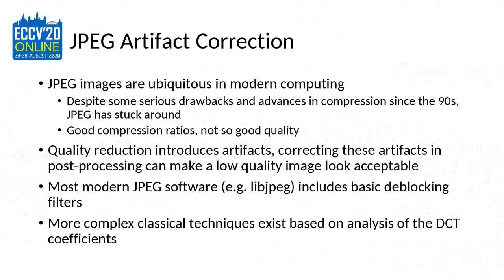The bottom line is that JPEG images are fairly ubiquitous in modern computing. They've managed to stick around since the 90s, despite having some serious drawbacks and there being major advances in compression since then. The compression ratios are pretty good for JPEG, but the quality is not so great, and the quality reduction introduces visible artifacts. Correcting these artifacts in a post-processing step can make even a low-quality image look acceptable.